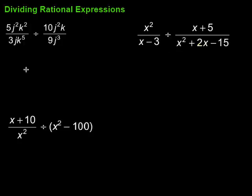So let's take a look at this first one right here. And the first thing we want to do, just like dividing fractions, this is fractions, we're going to do keep, change, flip. That means we keep the first one. So that's going to be 5j²k² over 3jk⁵. Then, I'm going to change the multiplication to division. So I have times, and then I'm going to flip. I'm going to take the reciprocal of the second one. So this is going to be 9j³ over 10j²k.